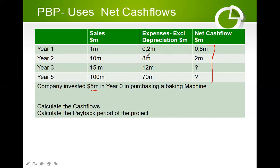Let's work through the example. We say 1 million minus 0.2 million gives 0.8 million; then 10 million minus 8 million gives 2 million; then 15 minus 12 gives 3 million. Then 100 minus 70 gives 30 million. These are our net cash flows. We are asking how many years will these net cash flows take to recover the 5 million invested in year zero.